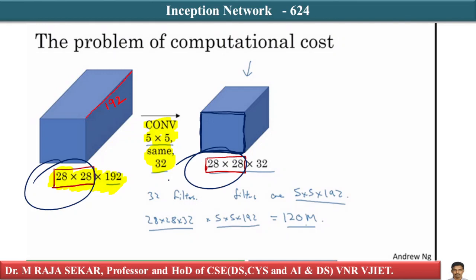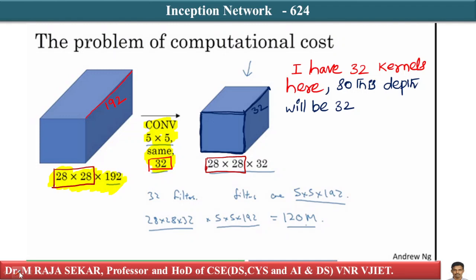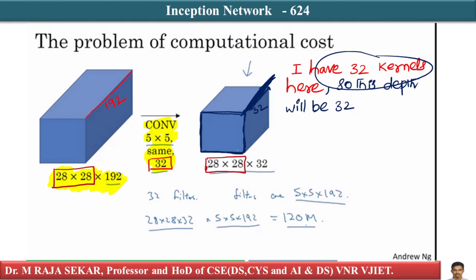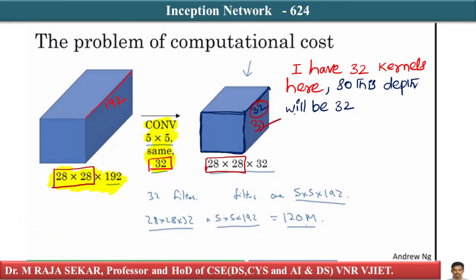What about the depth? I have 32 kernels in this convolution, so the depth of the output will be 32. Because of these 32 kernels, the depth of the output tensor is also 32.